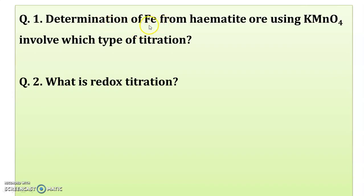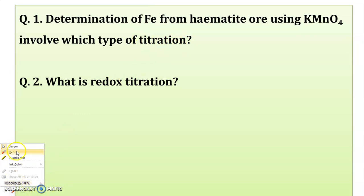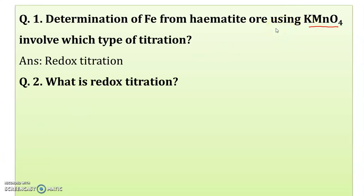Determination of percentage of Fe from hematite ore using potassium permanganate involves which type of titration? Here, determination of percentage of Fe using potassium permanganate — it is the redox type of titration.